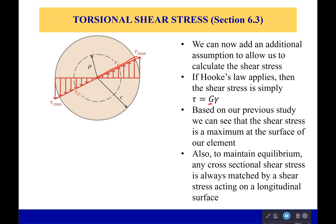Also, to maintain equilibrium, any cross-sectional shear stress is always matched by a shear stress acting on a longitudinal surface. So even though this one right here is tangent to my surface, I would also have a shear stress going through my surface, talking about a little surface element that would be keeping each of these elements in equilibrium. Otherwise, a part of your little shaft is going to pop off, and that just can't happen.